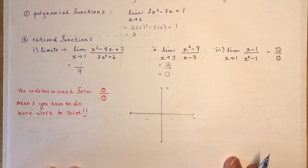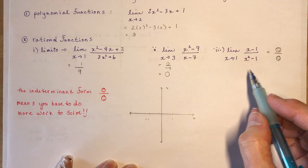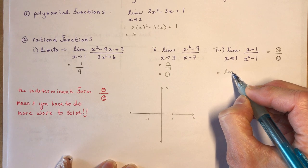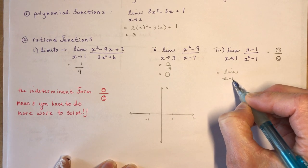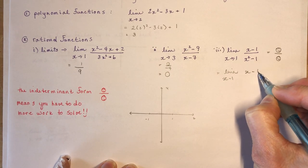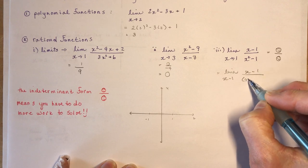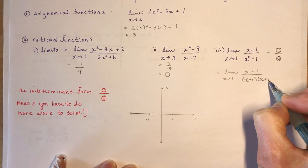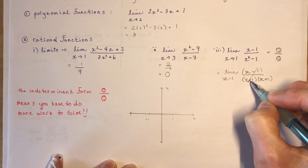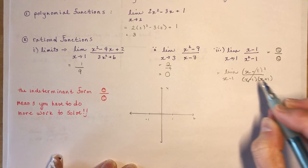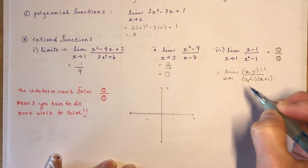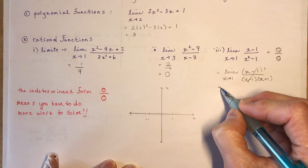To find this limit you have to do a little bit of work. The denominator is a difference of squares, so I can factor it as (x minus 1)(x plus 1). Those divide into each other, and now if I put in 1, I get 1 half.